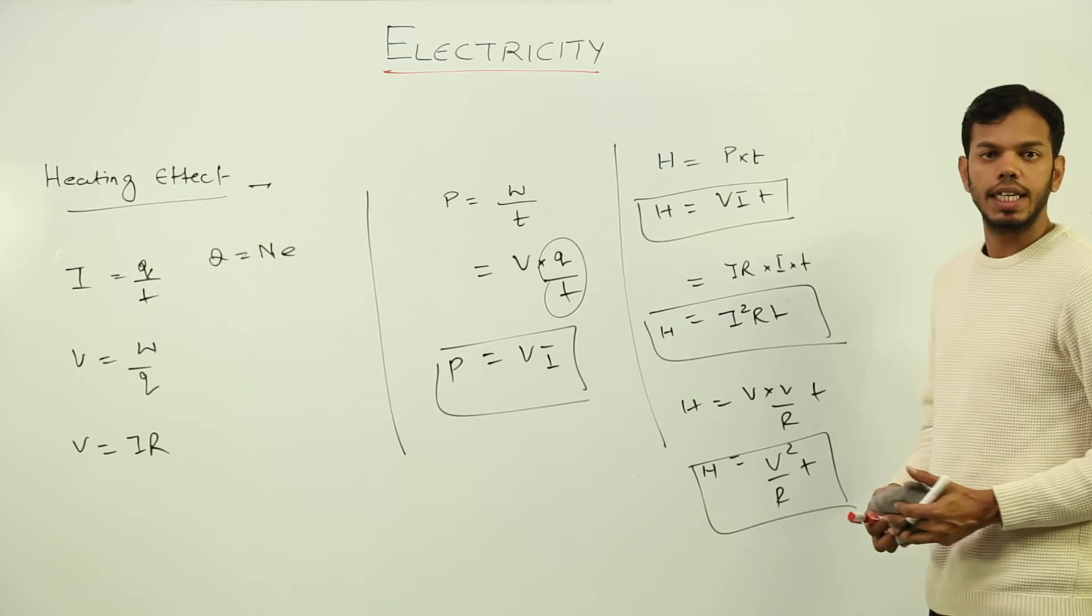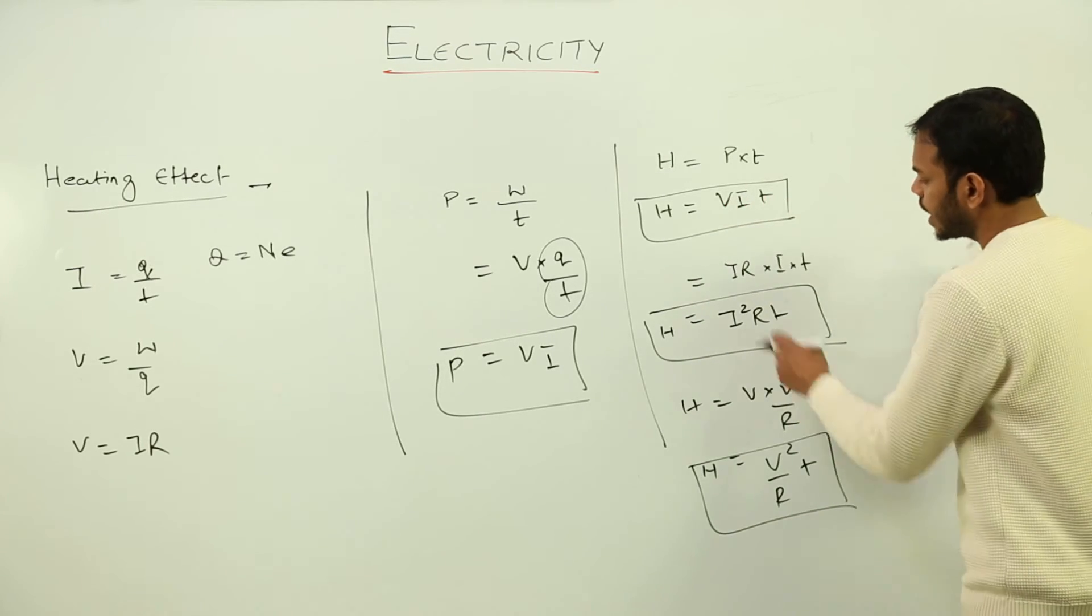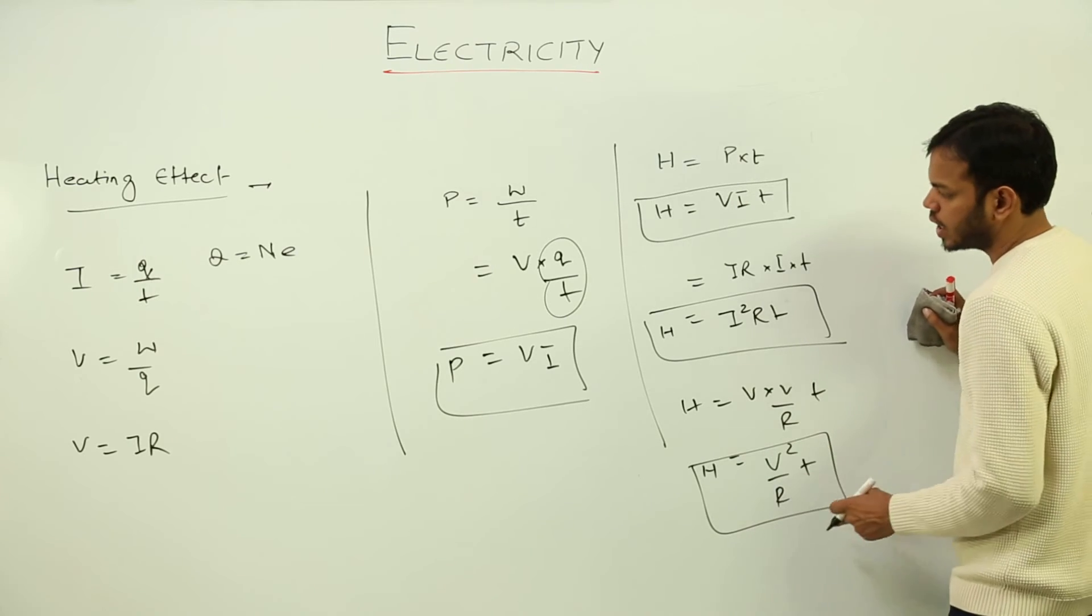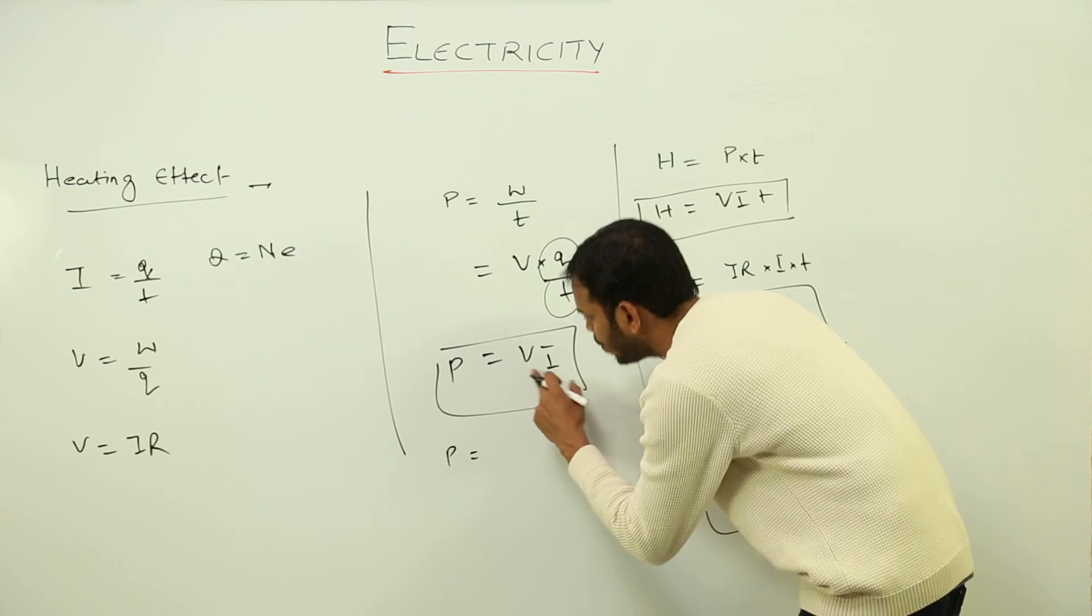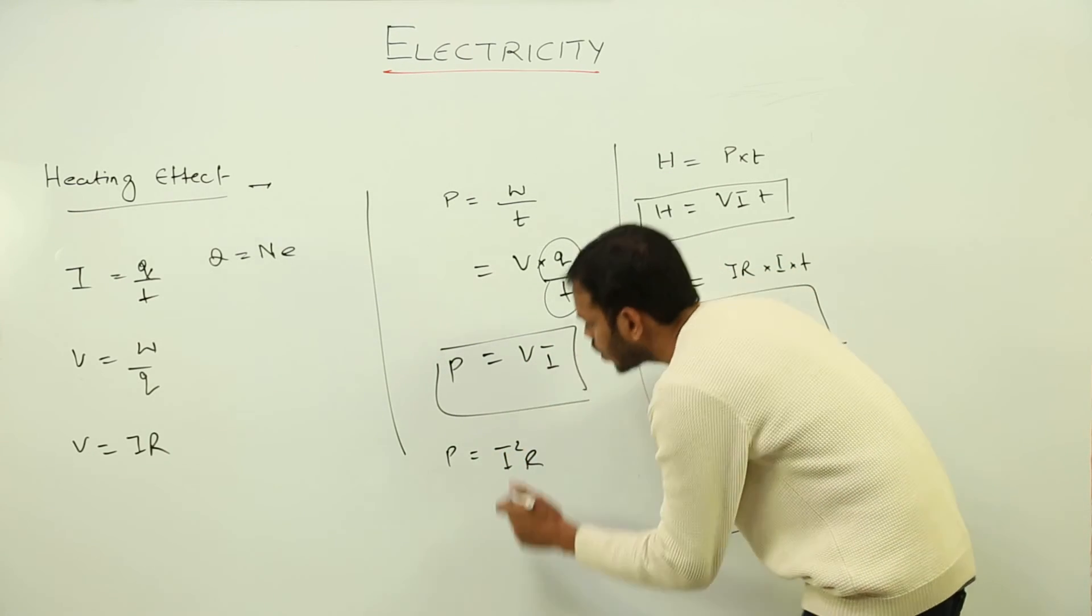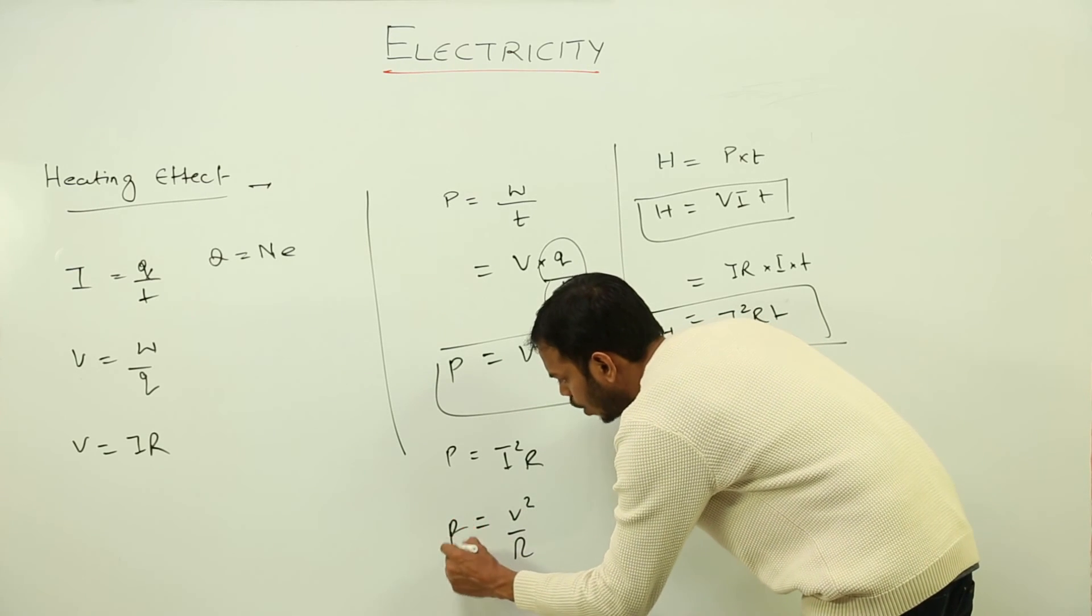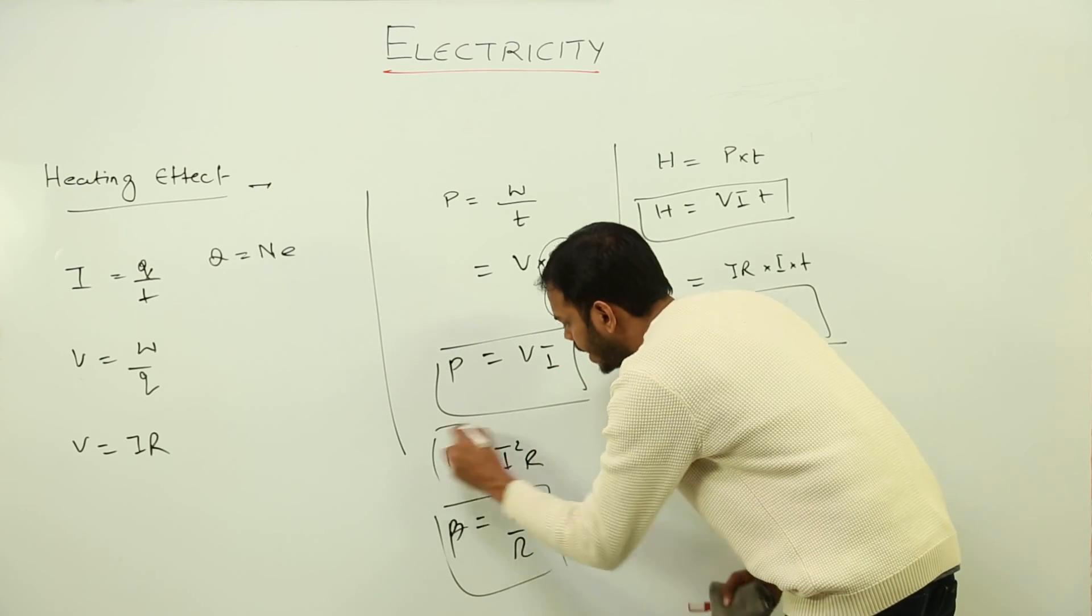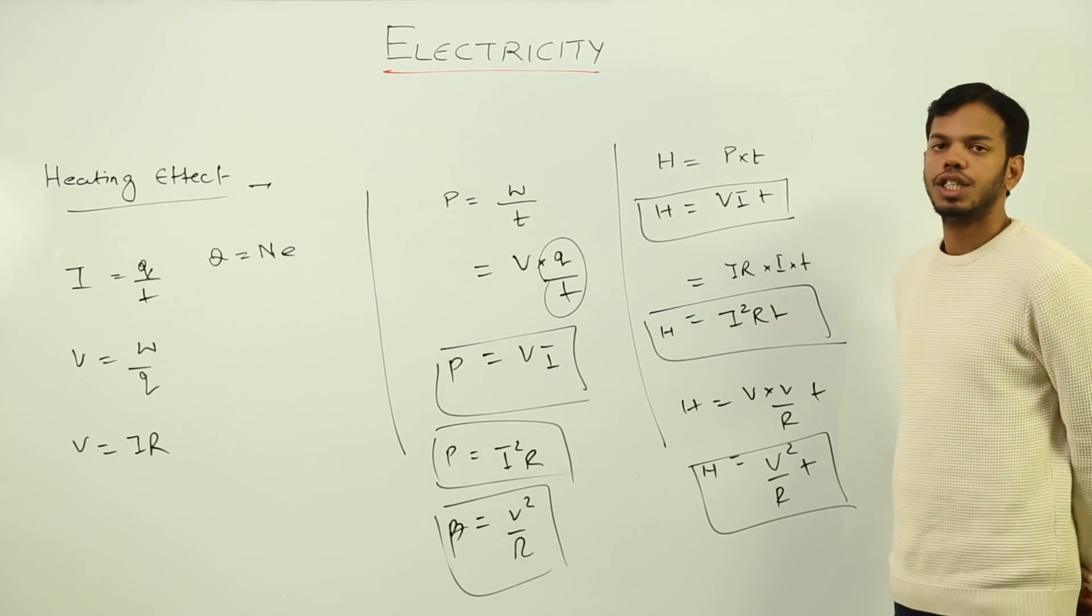Similarly, you can find three values for power. Either it's VI, or put V equals to IR, I'll get I square R, or put I equals to V upon R, so I'll get V square upon R. So I also have three formulas for power as well. And this is the power associated and heat generated in a circuit.